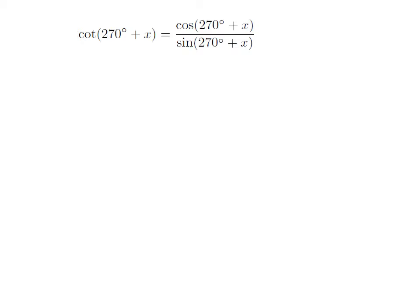As we know, cot theta is equal to cosine of theta divided by sine of theta. So cot 270 degree plus x is equal to cosine of 270 degree plus x divided by sine of 270 degree plus x.